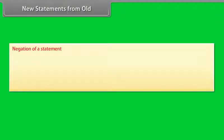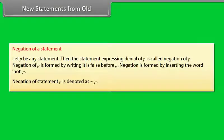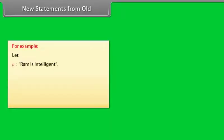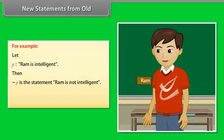New statements from old. Negation of a statement: let P be any statement. Then the statement expressing denial of P is called the negation of P. Negation of P is formed by writing 'it is false' before P. Negation of statement P is denoted as 'not P'. For example, let P be the statement 'Ram is intelligent.' Then not P is: 'Ram is not intelligent', or 'it is false that Ram is intelligent.'